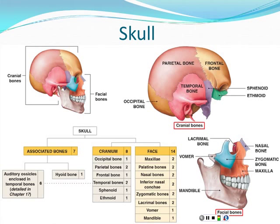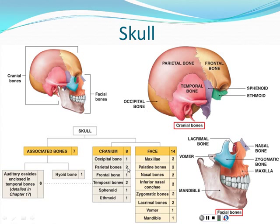The cranial bones include four unpaired bones: one occipital bone in the back, one frontal bone in the front, one sphenoid bone in the center of the skull three-dimensionally, and one ethmoid bone that forms part of the bony nasal septum. Then we have two parietal bones, one on each side, and two temporal bones, one on each side. All together these eight bones surround the brain.